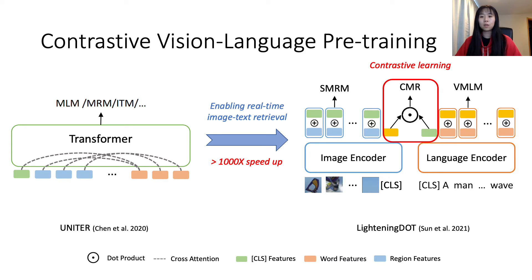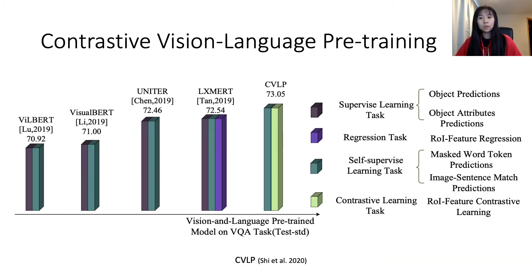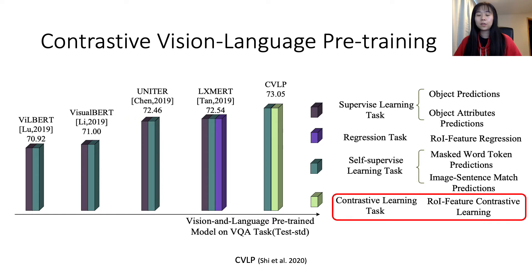The secret sauce of Lightning Dot is the use of contrastive learning to learn video-semantic embeddings. Another work, CVLP, also introduced new contrastive learning tasks for pre-training and achieved better performance on VL tasks. CVLP focuses on region modeling — it replaced the previously supervised learning, i.e., object class and attribute predictions, and the regression tasks, i.e., region feature regression, with a contrastive learning task on the region features.